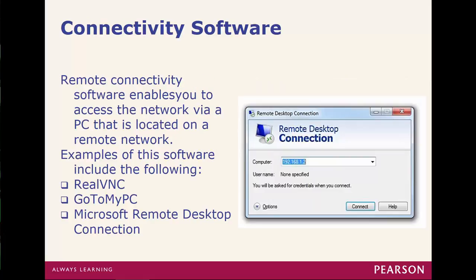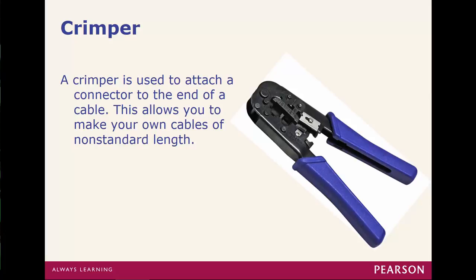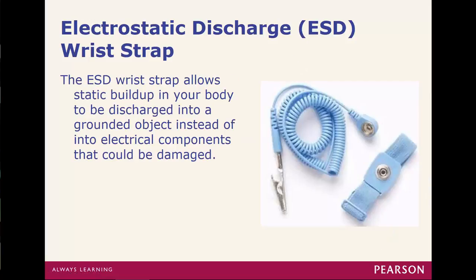Moving to some of the software: remote connectivity software like Remote Desktop, GoToAssist, or Join.me — anything that allows you to share your screen with someone else over a network connection or the internet. Other hardware could be crimpers, used for termination of an RJ45 or RJ11 — you'll notice it says 8P and 6P. ESD, or electrostatic discharge wire strap — if you're working on sensitive hardware, this will give it a safe way to discharge the excess electricity.